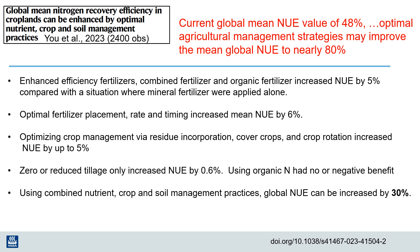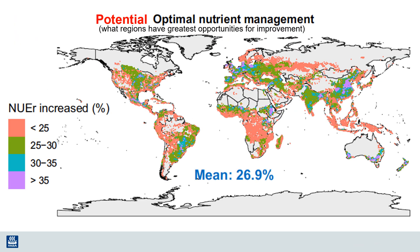I've highlighted just a few of their results here. They say that enhanced efficiency fertilizers and combining the best of both mineral and organic fertilizers can increase nitrogen efficiency by an average of 5%. Improving fertilizer placement, rate, and timing can increase nitrogen efficiency by an average of 6%. Surprisingly to me, the adoption of no-till practices had virtually no impact on nitrogen use efficiency, and a switch to organic nitrogen sources had no impact or a slightly negative impact. But by adopting a variety of practices, the authors estimate that nitrogen efficiency can improve by about 30%.